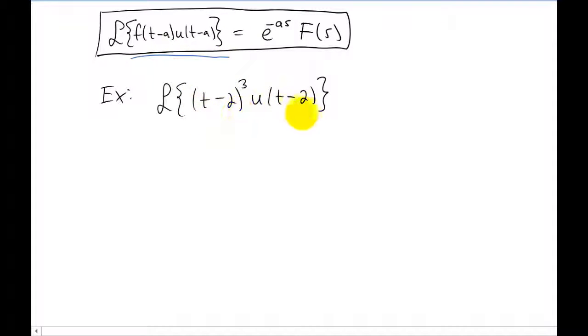So let's compare our problem with the entry in the table. I think it's pretty obvious that our A value is going to be two. So now this u of t minus two is the same as this u of t minus A. And I also think it's relatively obvious that this f of t minus A, which is f of t minus two, in our example is going to be equal to this right here, t minus two quantity cubed.